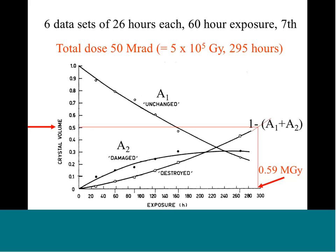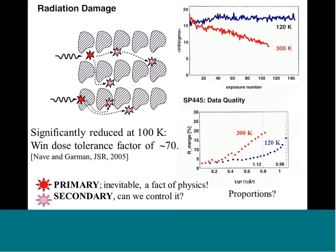In the early 1990s, protein crystallographers started to cryocool crystals as the third-generation synchrotrons came online. Crystals damaged extremely quickly at the ESRF, which was the first third-generation synchrotron, and cryocooling to 100K saved the day, because approximately 70 times more data could be collected at 100K than at room temperature.